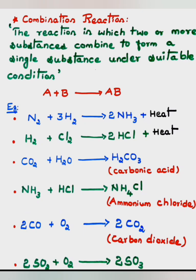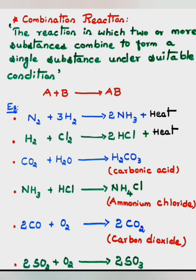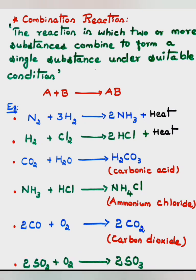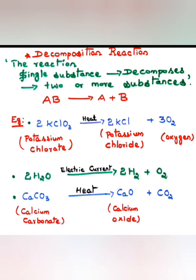Example 5: 2CO + O₂ — carbon monoxide combines with oxygen to form carbon dioxide (2CO₂). It could be two elements, two compounds, or one element and one compound combining — the result is the product. Example 6: 2SO₂ + O₂ — sulfur dioxide combines with oxygen to give sulfur trioxide (SO₃). These are examples of combination reactions.